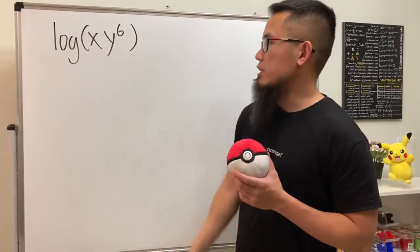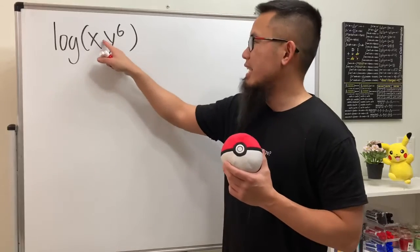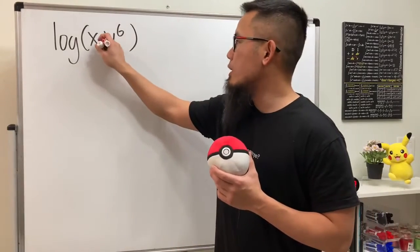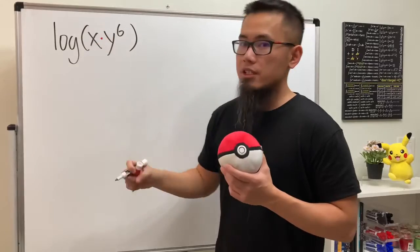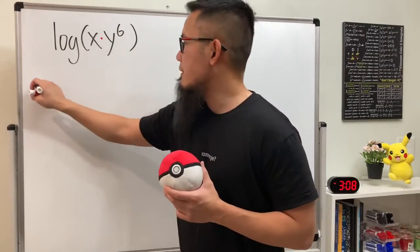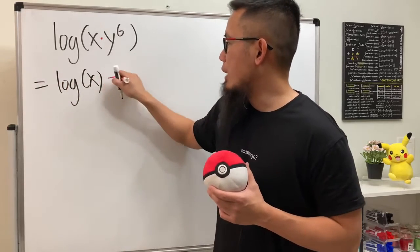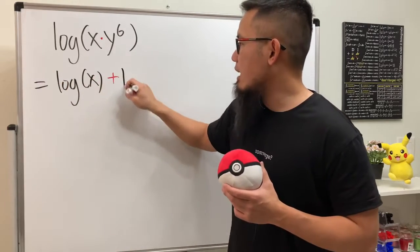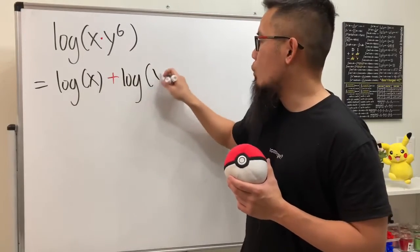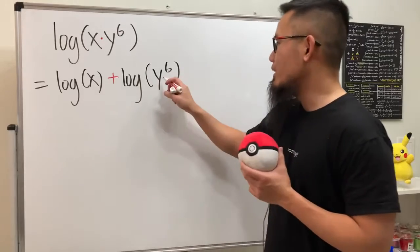Here we'll be expanding this logarithm — we have log base 10 of x times y to the sixth power. Since this is a multiplication, we can break it apart using addition. So we will have log of x, and then we add another log with the input being y to the sixth power.